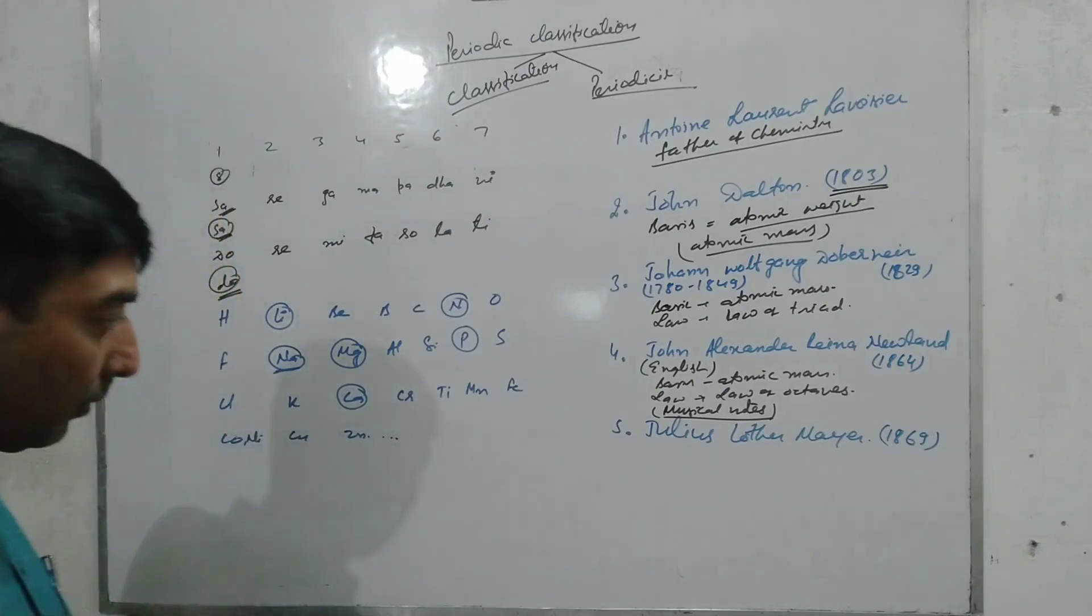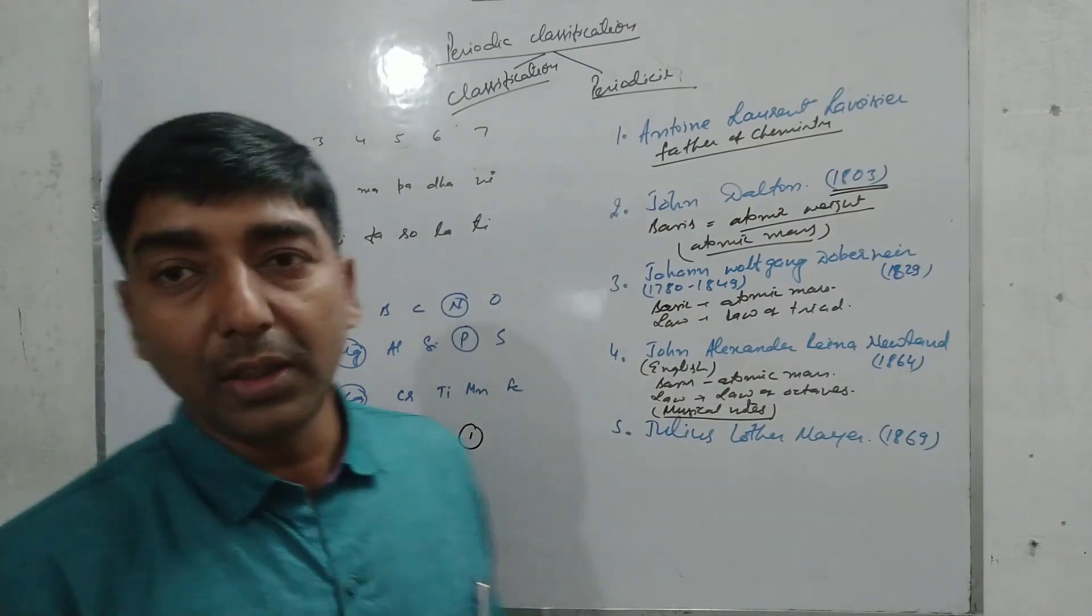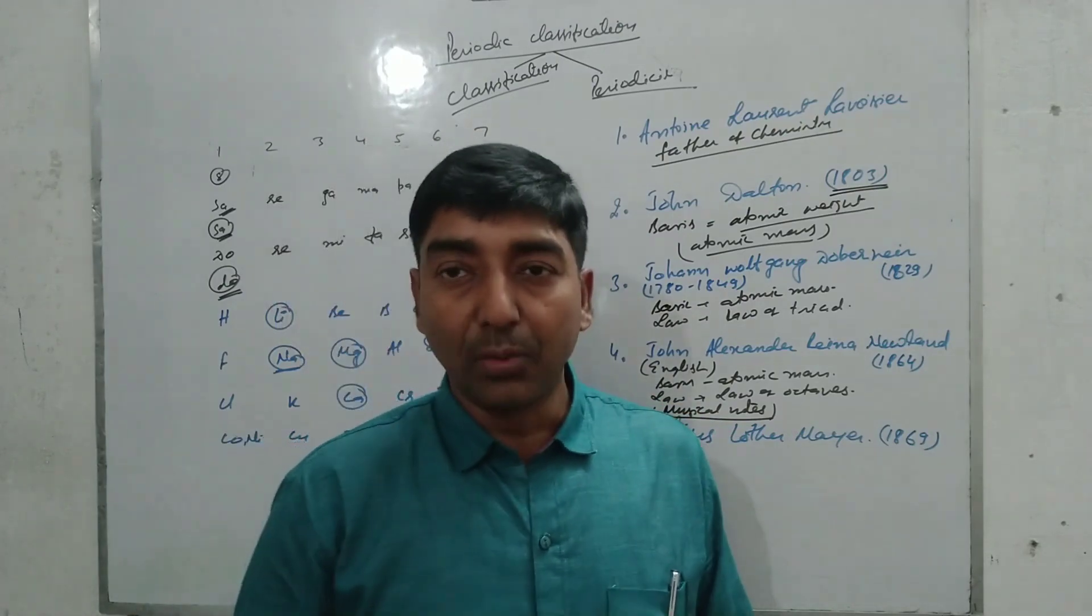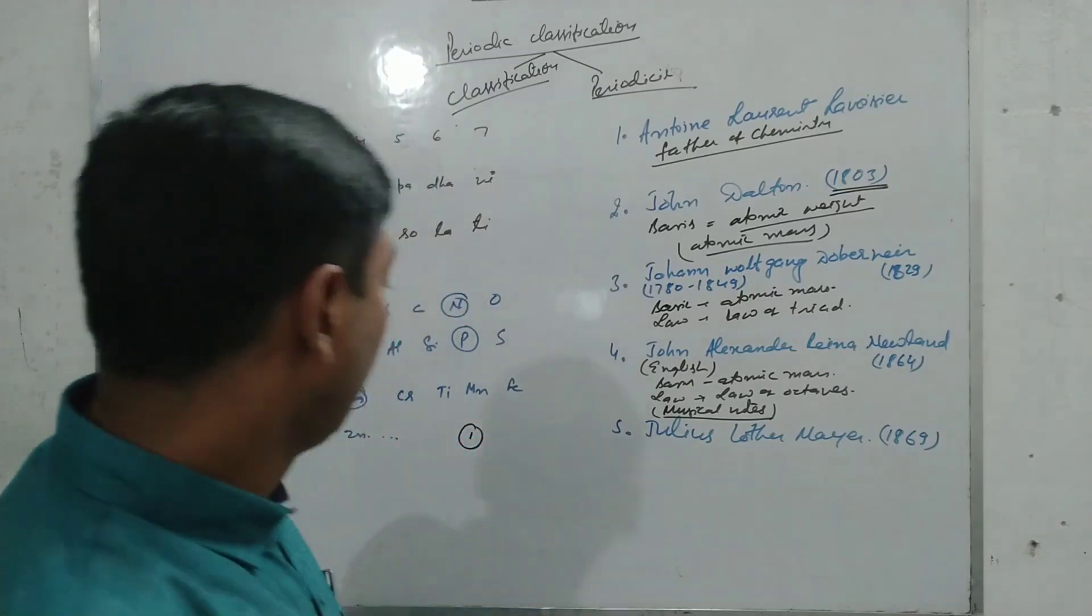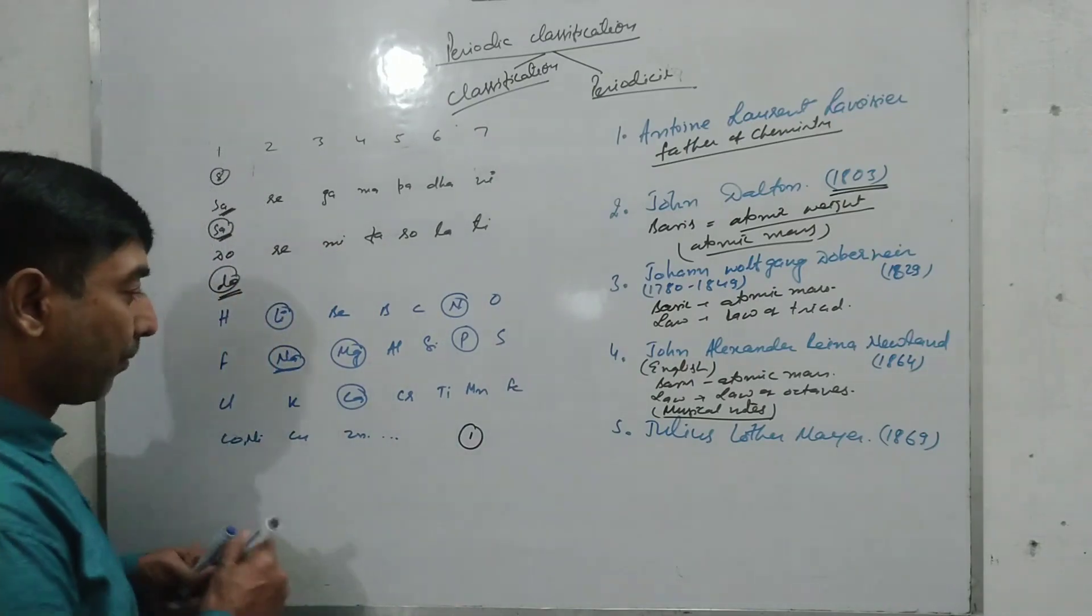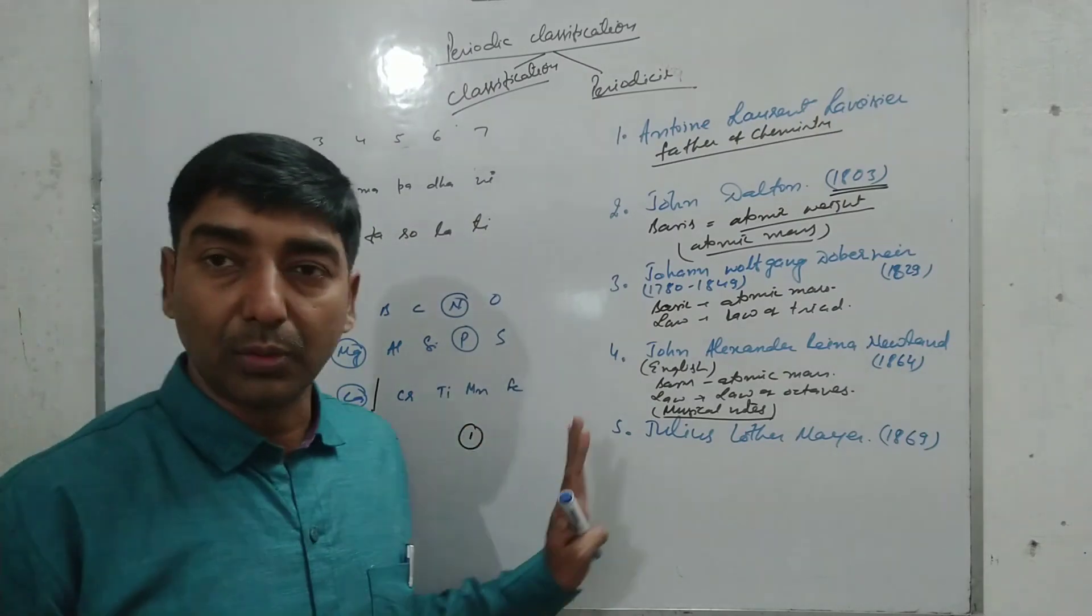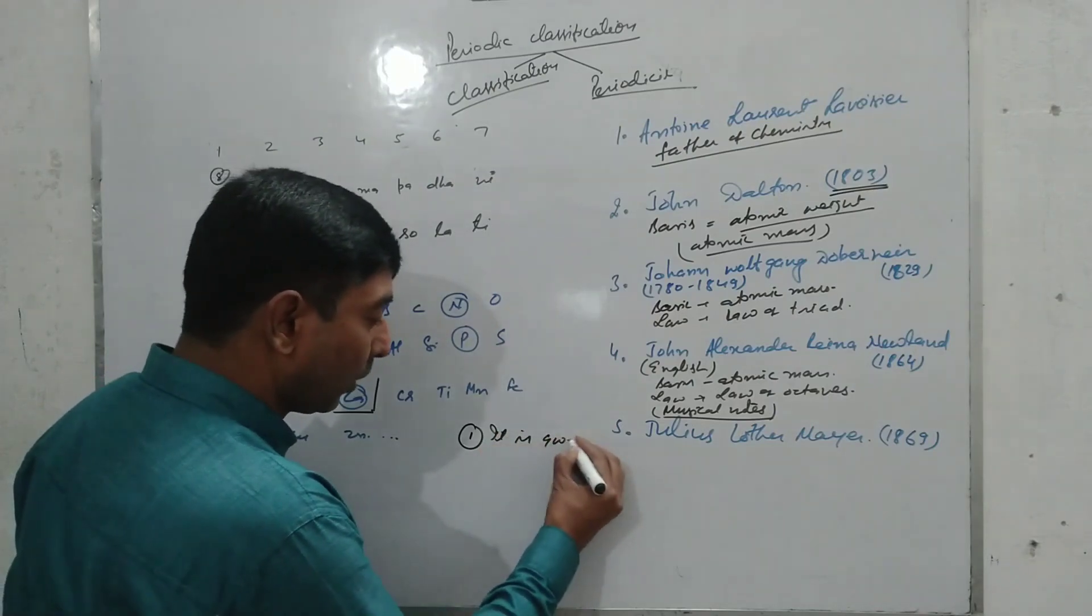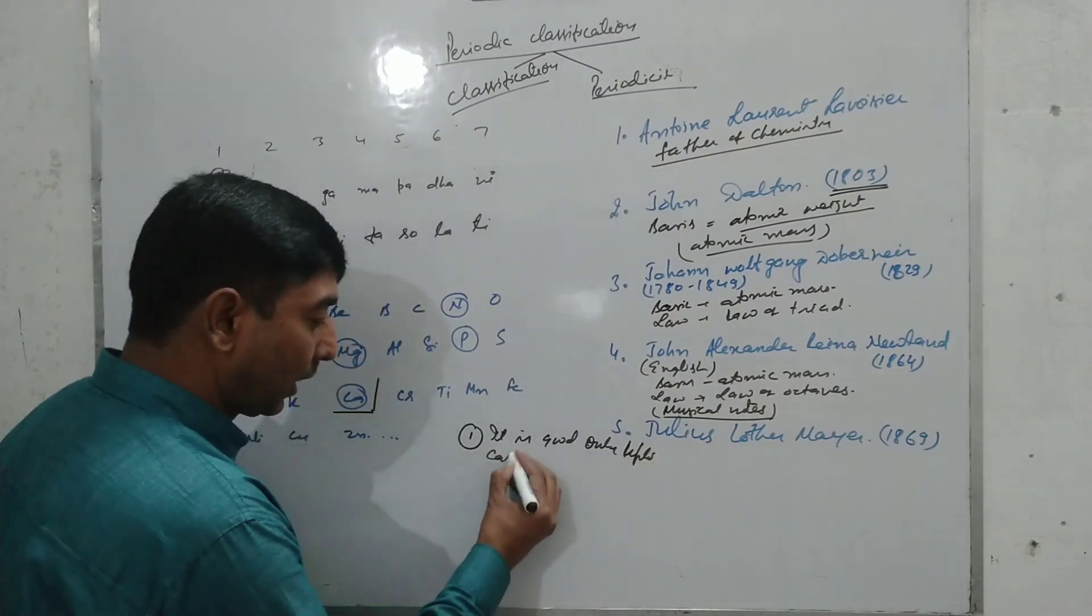Now let's talk about its demerits. The first demerit: it was good only up to calcium. After calcium, no element shows this type of similarity. It's good for lighter elements up to calcium. Afterward it doesn't show such similarities.